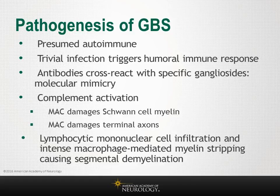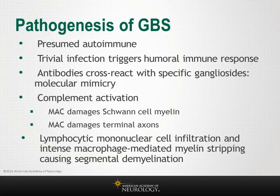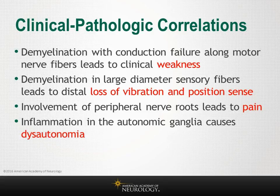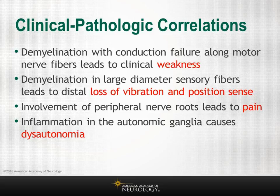Regarding pathogenesis, it is presumed autoimmune. A trivial infection triggers a humoral response, and these antibodies cross-react with gangliosides in the phenomenon of molecular mimicry. There is complement activation, lymphocyte cell infiltration of proximal nerves and nerve roots, and macrophage-mediated myelin stripping causing segmental demyelination. Demyelination with conduction failure along motor fibers leads to clinical weakness; demyelination in large diameter sensory fibers leads to distal loss of vibration and position sense; inflammation of peripheral nerve roots leads to pain; and inflammation of autonomic ganglia causes dysautonomia.